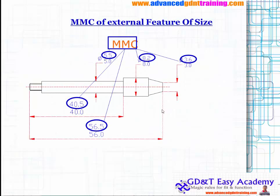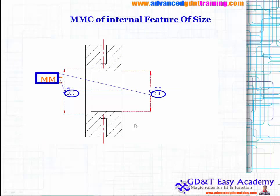Looking at this particular drawing, the dimension 40.5 represents the MMC condition for one feature. The 56.5 is the MMC for the external feature because adding more material means it will weigh more, and the largest external diameter is the MMC condition. For a conical part, the largest diameter is also the MMC since it is an external feature of size. For an internal feature such as a hole, the smallest hole size on both sides gives the MMC condition — the lowest diameter point for a hole derives the MMC.